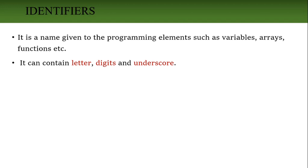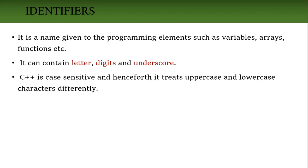Letters means all uppercase and lowercase letters. Digits means all the digits. In special characters, only the underscore is used to write an identifier. The main thing about identifiers is that they always start with a letter or underscore — they will not start with a digit. Remember this: identifiers always start with letters or underscore. From the second character onward, we can use digits. And C++ is case sensitive, so uppercase and lowercase letters are treated differently.